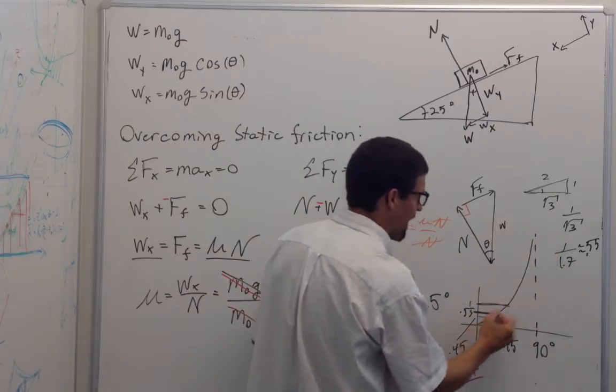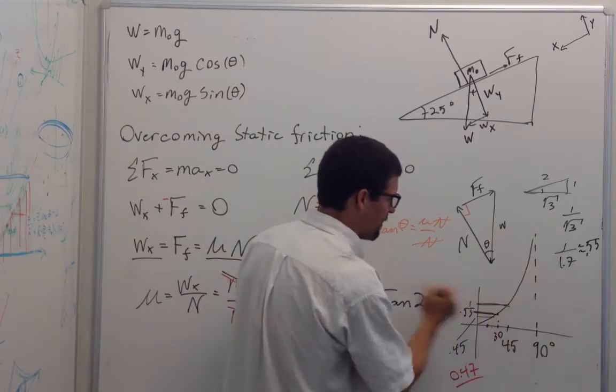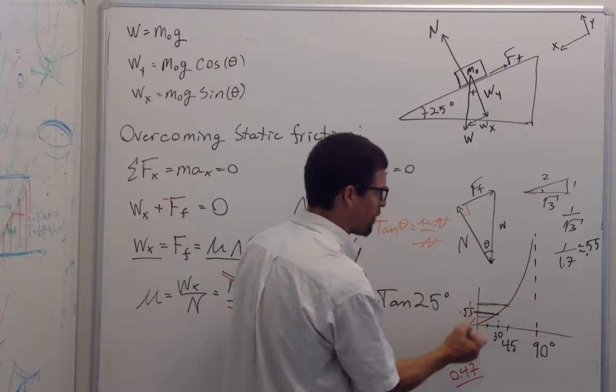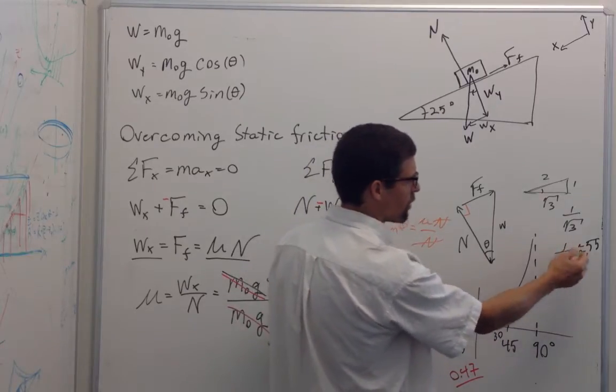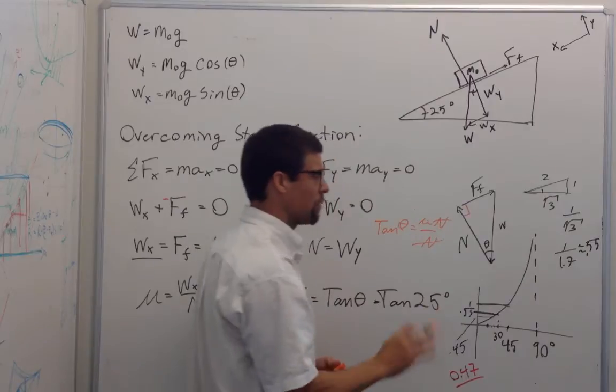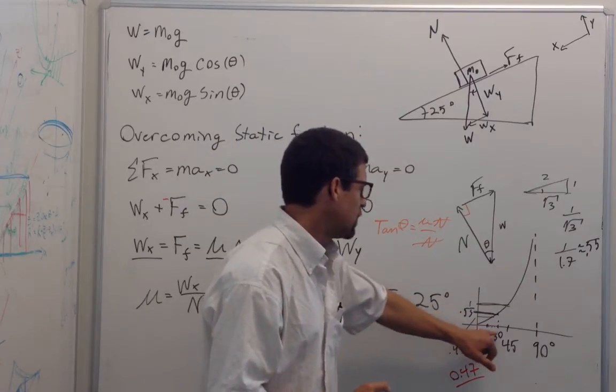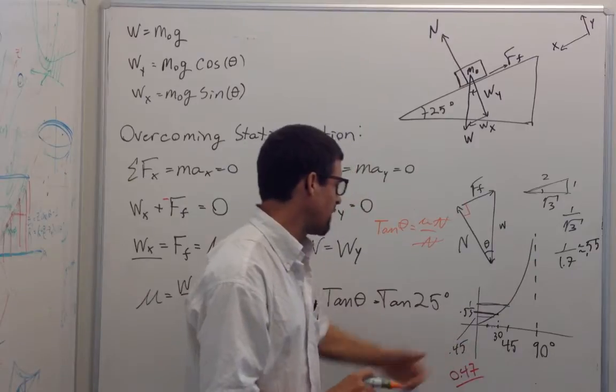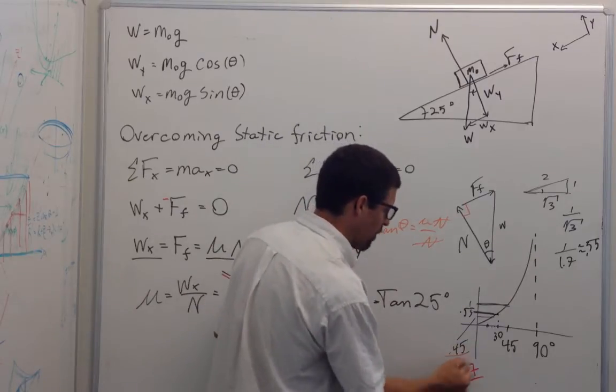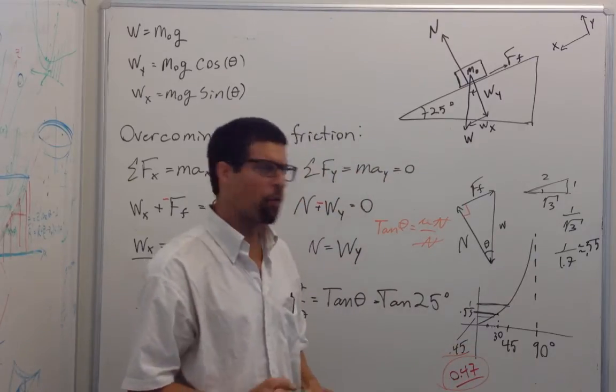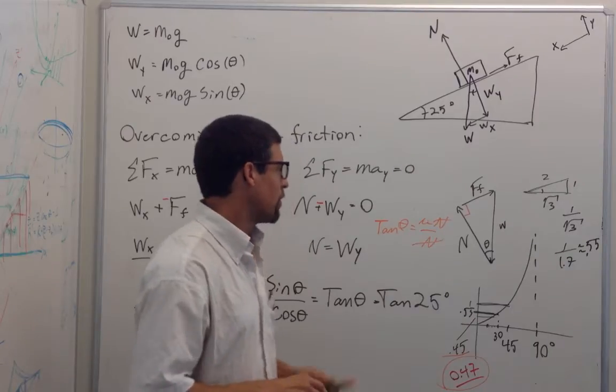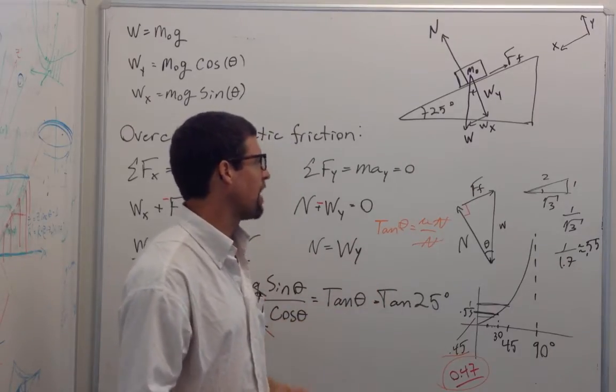I know the tangent looks like this, I know the tangent of 45 is 1, I know the tangent of 30 is about 1 over the root of 3, so that's 1.7, so that's about 0.55. So for 25 degrees I estimated 0.45, I was pretty close, my calculator gave me 0.47. So the coefficient of static friction is about 0.47.